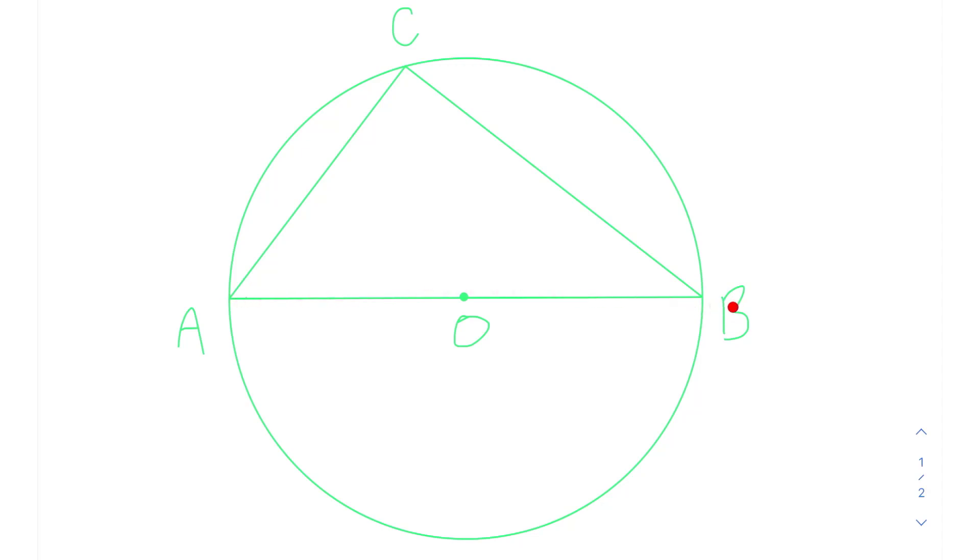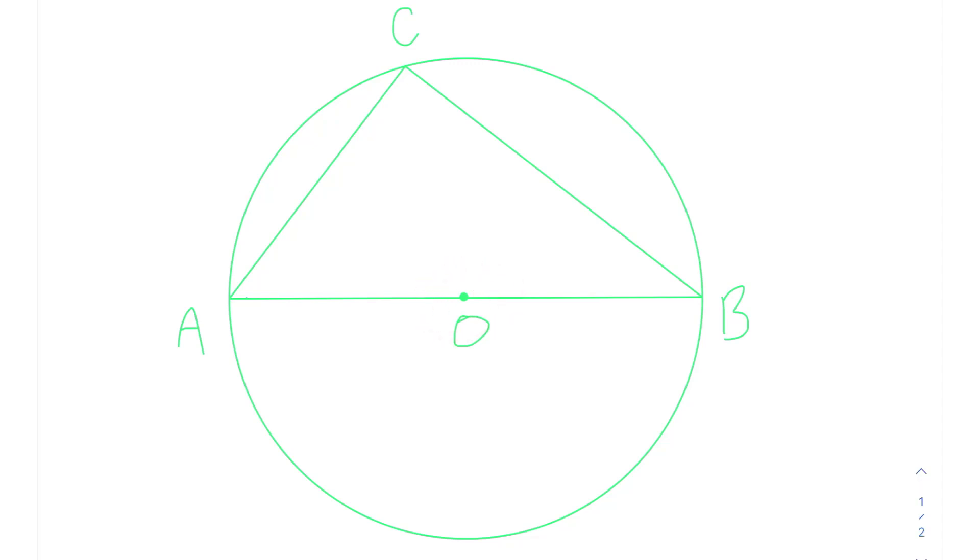AB is a diameter because it is a chord that is passing through the center of the circle. We know that diameters split the circle evenly in half.